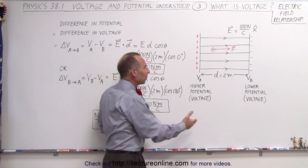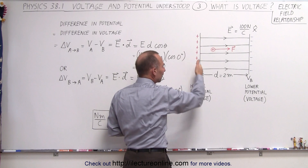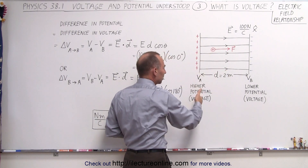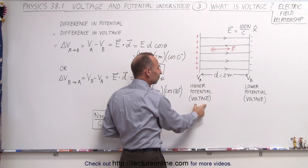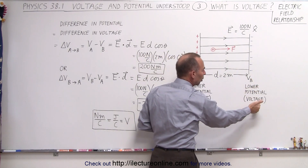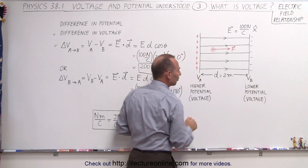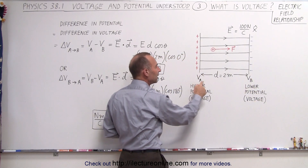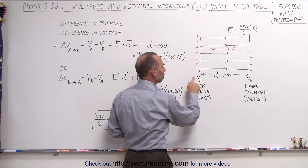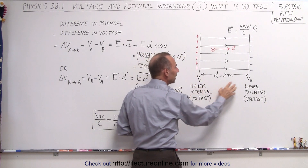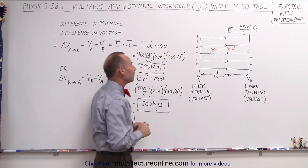So we can say that on the left side of this electric field we have a higher potential, a higher voltage, and on the right side we have a lower potential, a lower voltage. We can denote that by V sub A and V sub B, so that the voltage at A is higher than the voltage at B.